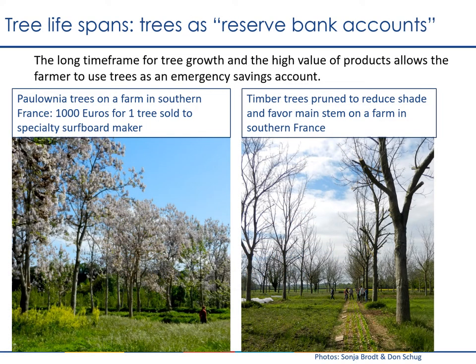The long lifespans of trees means they can often act as reserve bank accounts for the farmer, especially if used to produce biomass like timber, which is flexible in terms of when it can be harvested. This example is from southern France, where Paulownia trees are interspersed with other crops. The farmer can wait to harvest a tree when extra income is needed — one of these Paulownia trees was sold for 1,000 euros to a specialty surfboard maker. Timber trees can also be pruned to minimize negative impacts such as shade on understory crops, while not interfering with the main stem, which is the high value product.